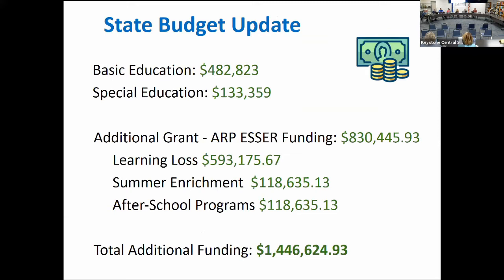Under basic education, the district is receiving an additional allocation of $482,823. This amount is expected to be part of annual revenue from the state going forward. Under special education, there is an additional $133,359, which would also be sustained through future budgets.